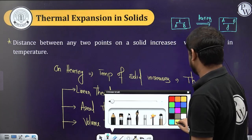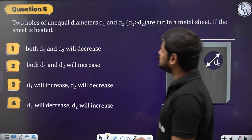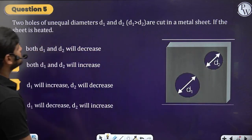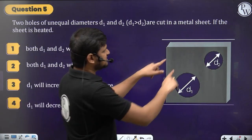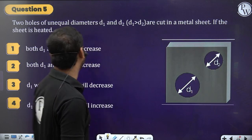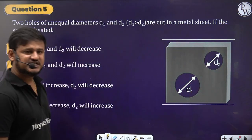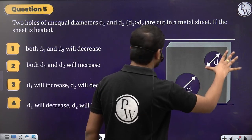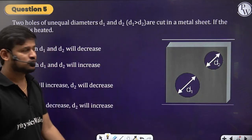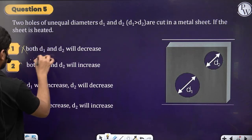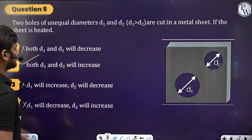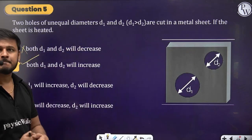Question: Two holes of unequal diameters D1 and D2 are cut in a metal sheet. If the sheet is heated, what happens to D1 and D2? Upon heating the metal expands, so both D1 and D2 will increase. Option 2 is correct.